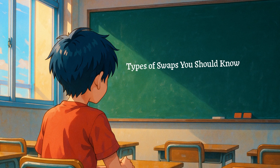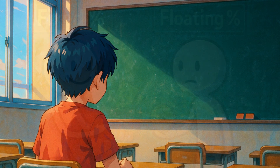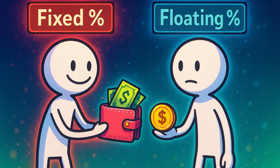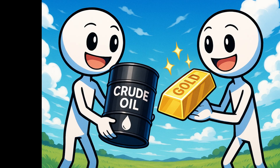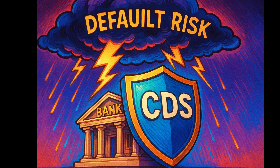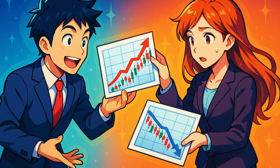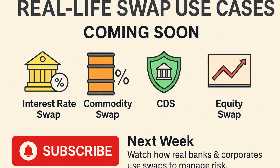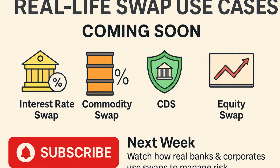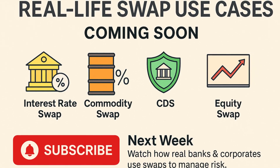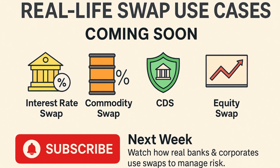That's just one type of swap. There are also interest rate swaps, exchanging fixed and floating rate payments; commodity swaps, based on prices of oil, metals, etc.; credit default swaps (CDS), used to hedge credit risk; and equity swaps, linked to stock market returns. More details on each with real-life use cases will be covered in an upcoming video, so subscribe and stay tuned.